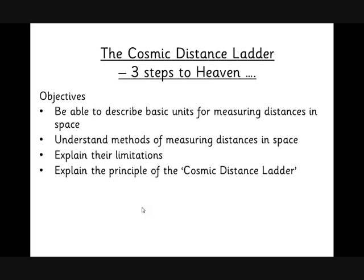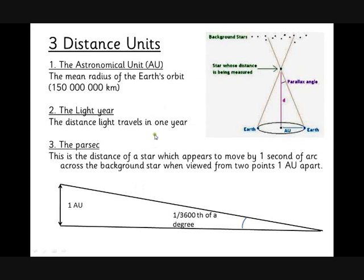We're going to do this by starting off with some basic units so that we know the units we're talking about when measuring these distances. Then we're going to crucially look at the different methods of measuring distances in space and their limitations. Hopefully this will get us to a good idea of this concept called the cosmic distance ladder. It's called the ladder because we've got steps - we've got three steps to look at of how we measure increasing distances in space.